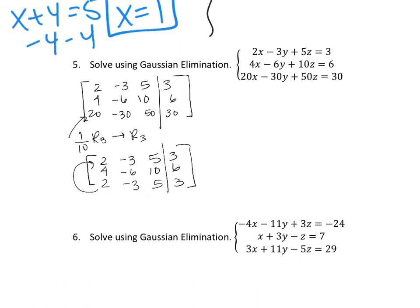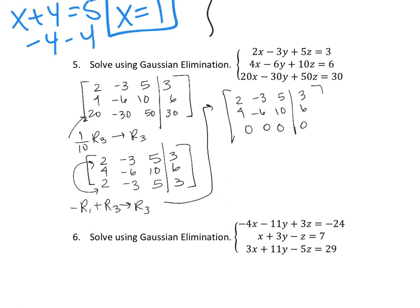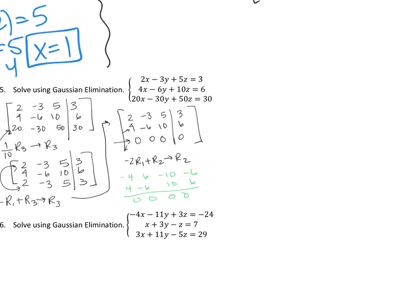Rows 1 and 3 are identical, so taking negative row 1 plus row 3 gives a row of all zeros. Then taking negative 2 times row 1 plus row 2 also gives all zeros. The matrix reduces to just the top plane and two rows of zeros — this means all the planes are on top of each other, and there are infinite solutions.